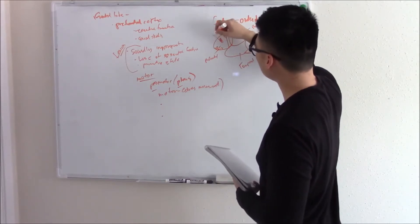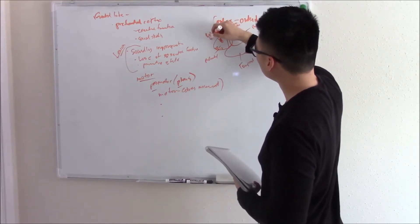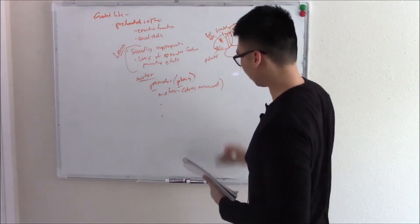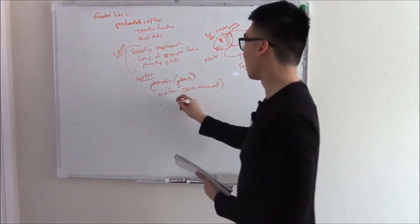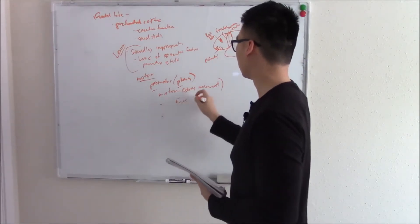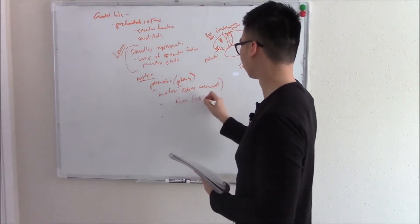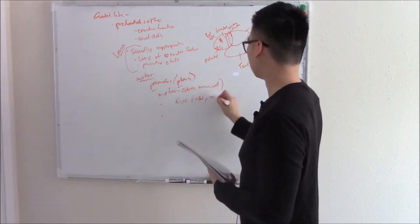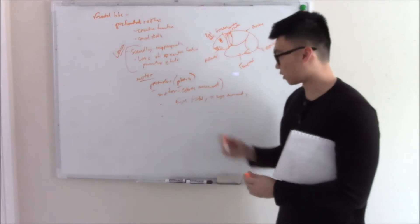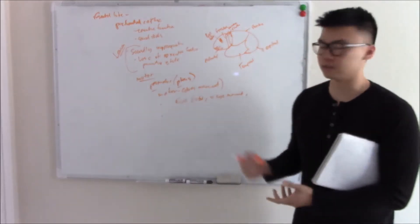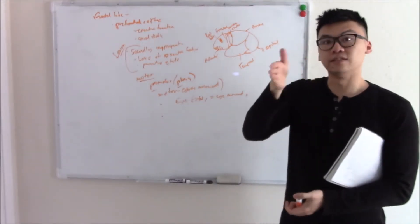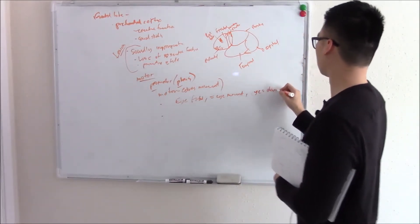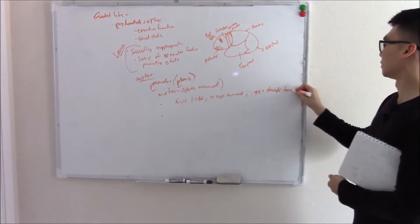You also have your eye fields in the frontal lobe. Because we're still talking about motor function, the eye fields control your eye movement. If there's a lesion in your frontal eye field, your eye movement will be off — your eyes will deviate towards that lesion.